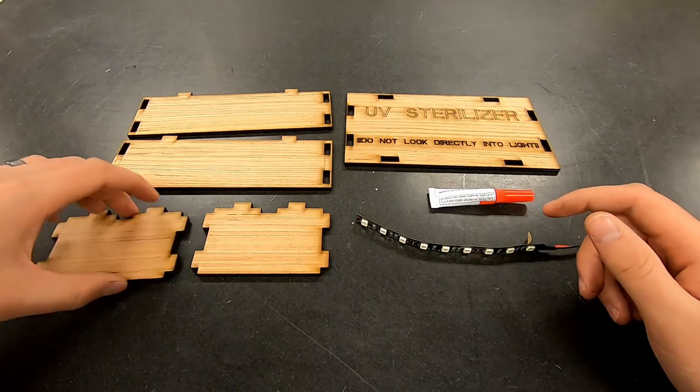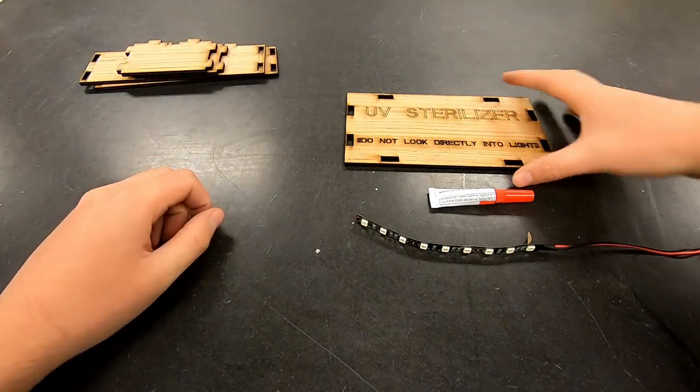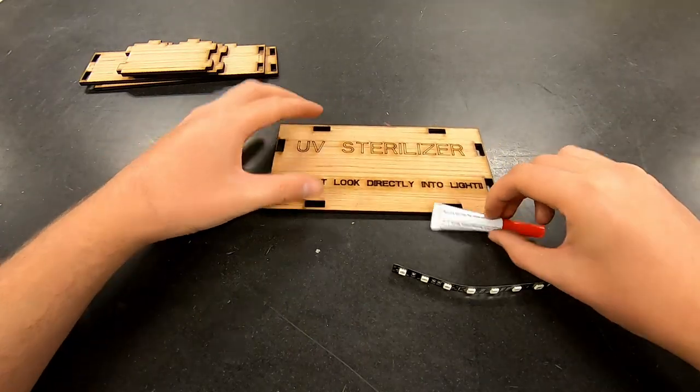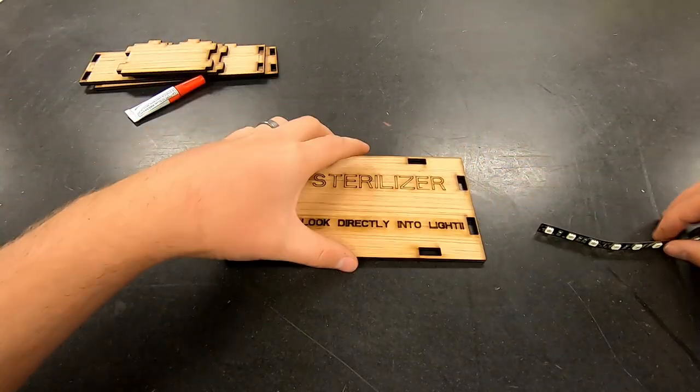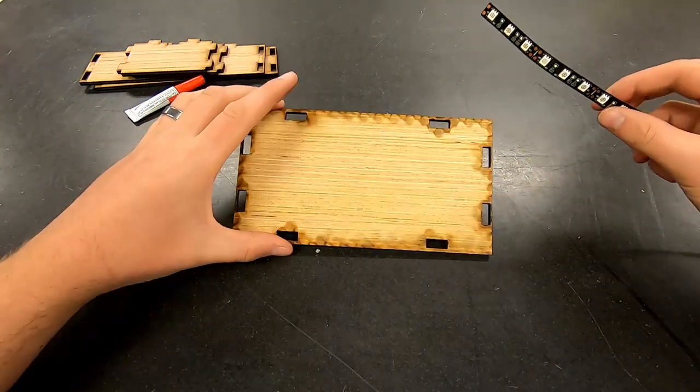So to start out this activity we're going to set the side pieces off to the side as well as the glue and attach the LED strip to the top of the top piece.